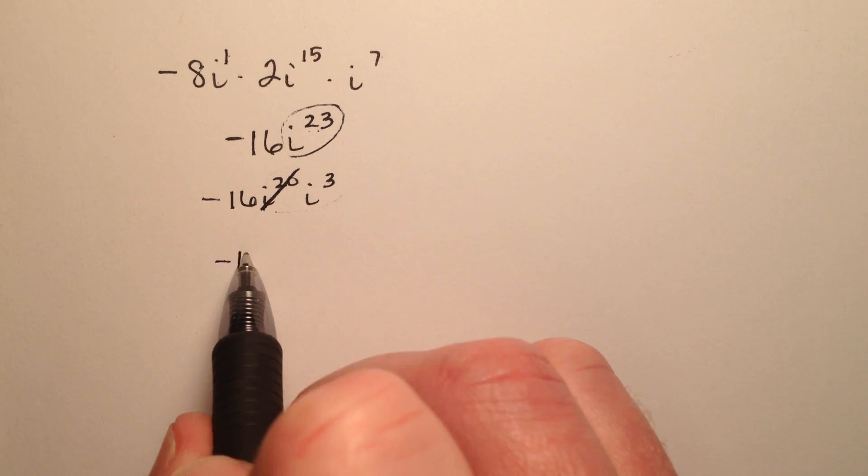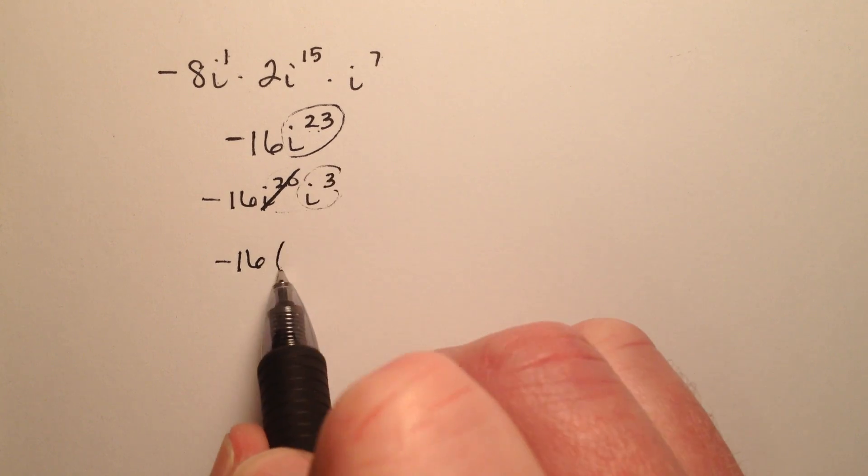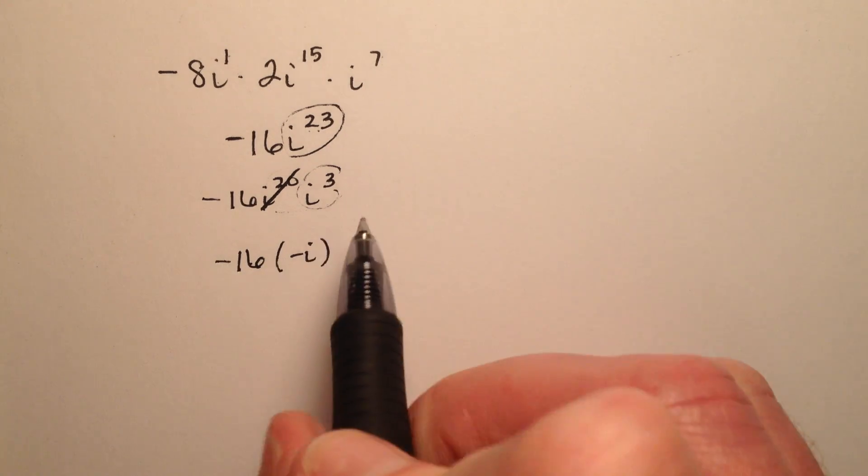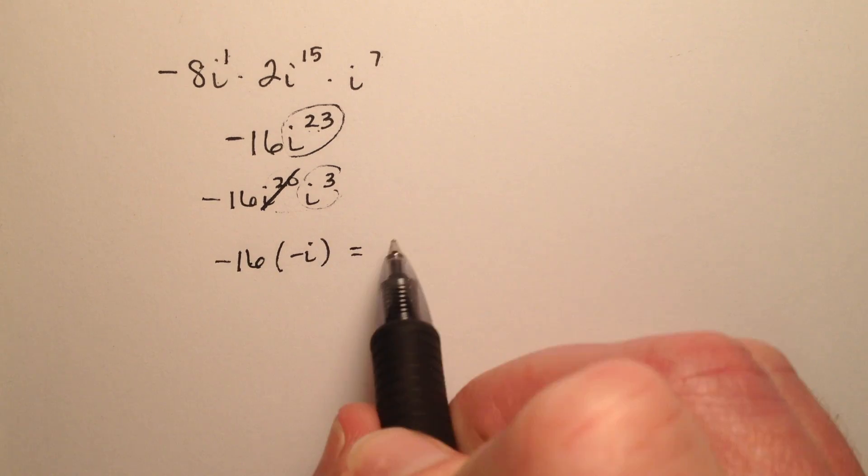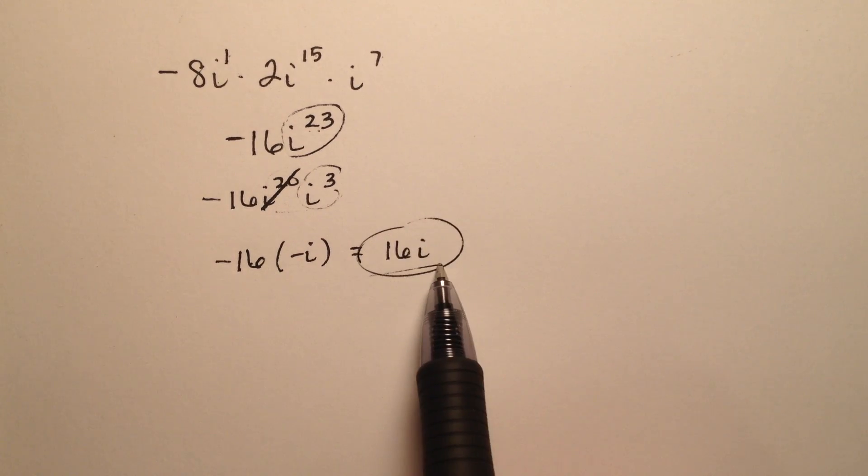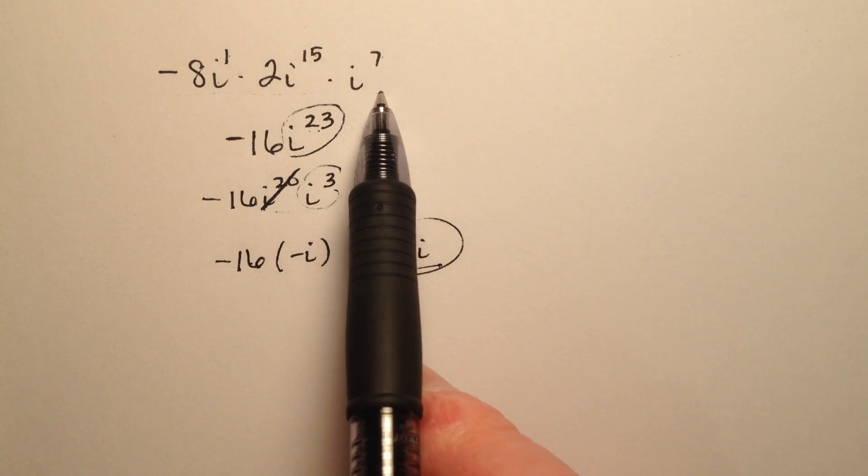So the i cubed will be a negative i, so negative 16 times negative i will be 16i. So 16i will be the simplification of this expression.